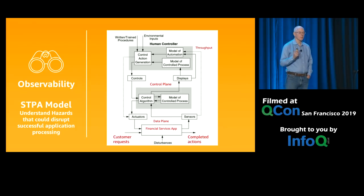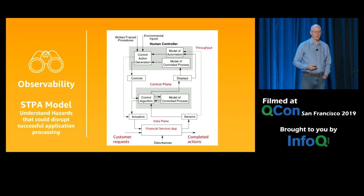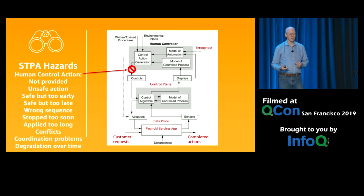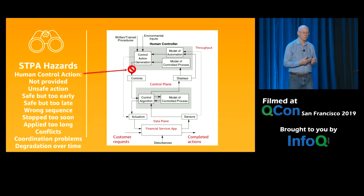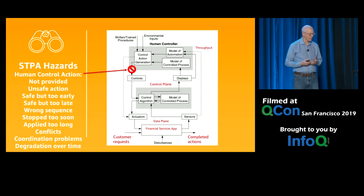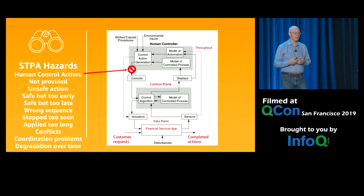This is how STPA works. Instead of looking at the boxes and asking what could go wrong with this box, we look at the wires — the connections, the information flows. Let's say the human controller sees throughput go to zero. The human is supposed to generate a control action, but there are all these different failure modes. The human was not paying attention — not provided. They didn't do the action, so maybe the system runs amiss for a while. Or they do an unsafe action, like rebooting everything in sight. Or the system was actually running fine but they got freaked out and did something unnecessary.